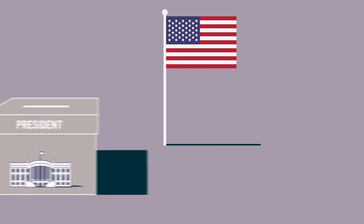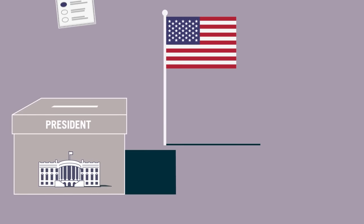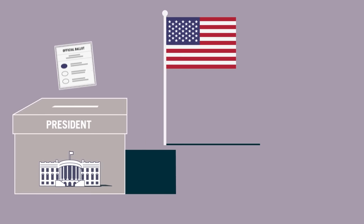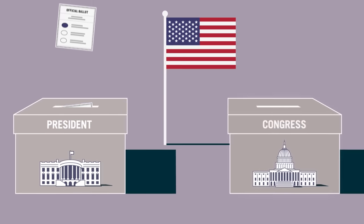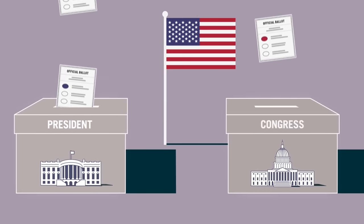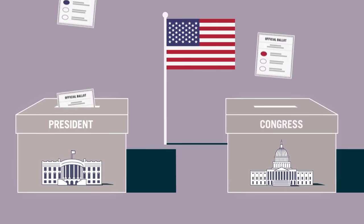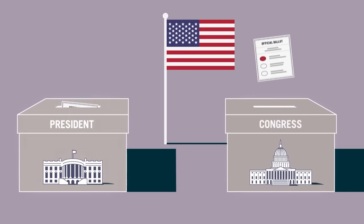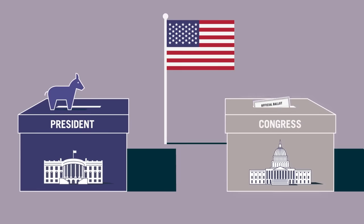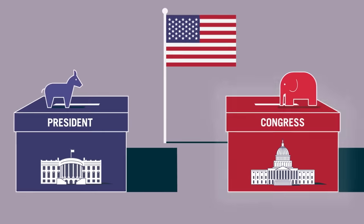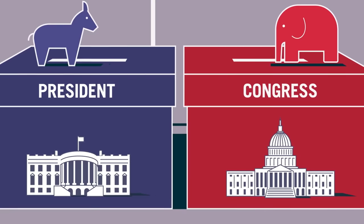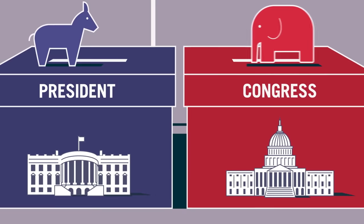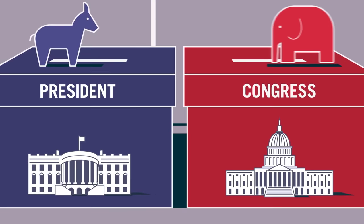In presidential democracies, like the United States, people vote on who should be the leader of the country, the president. And they also separately vote on who should represent them in the legislature, Congress. Sometimes the president and the majority of the legislators in Congress belong to different political parties.